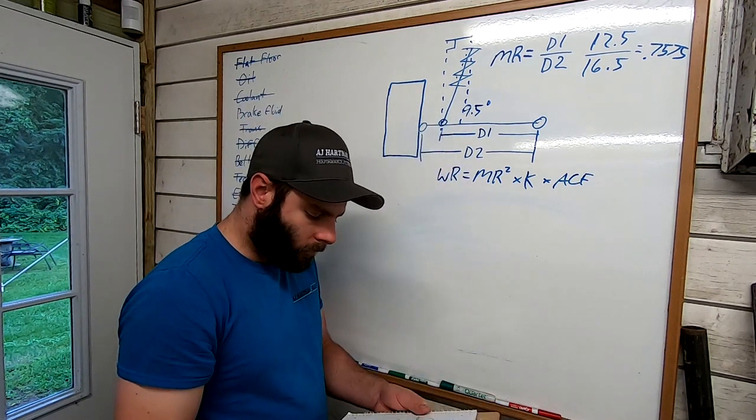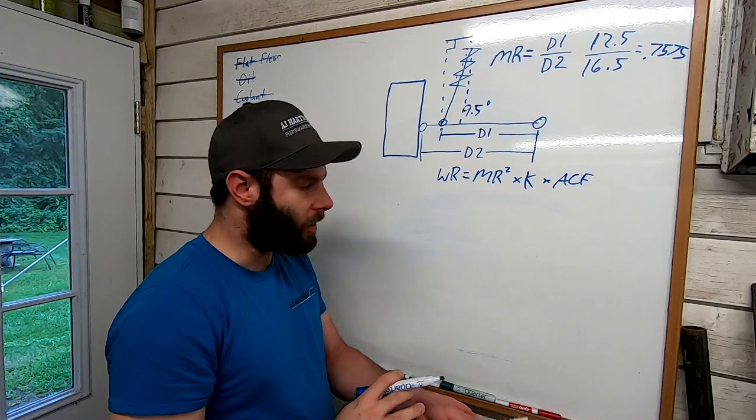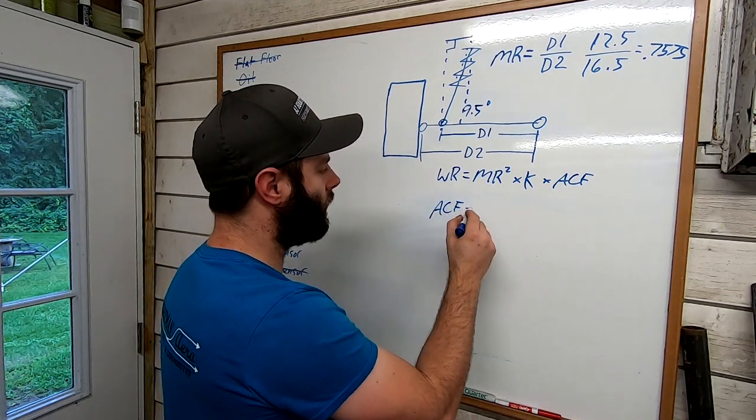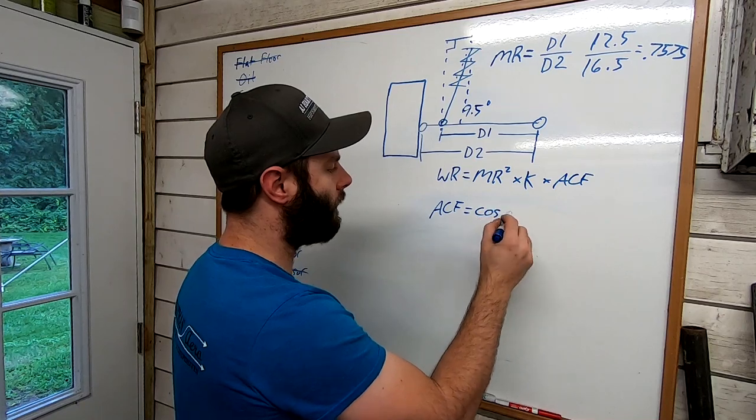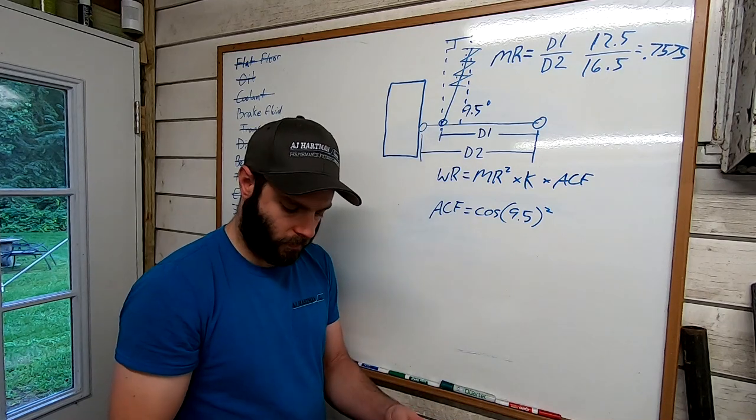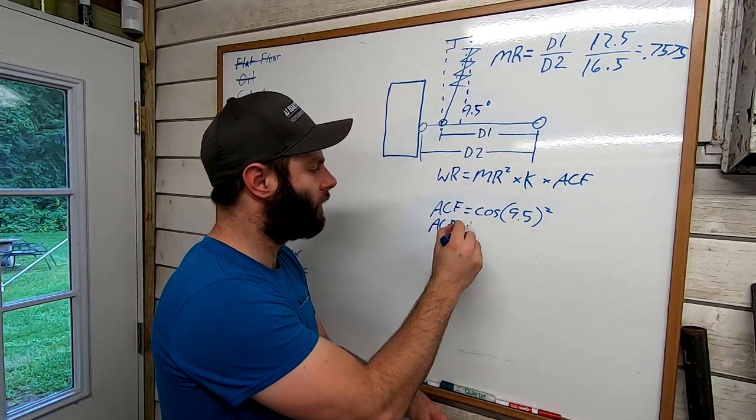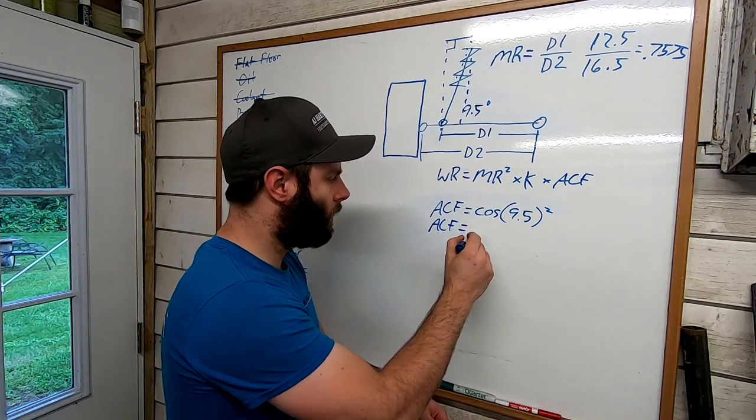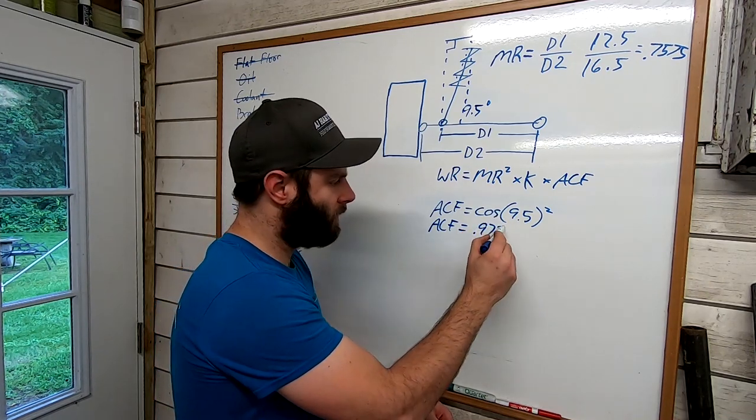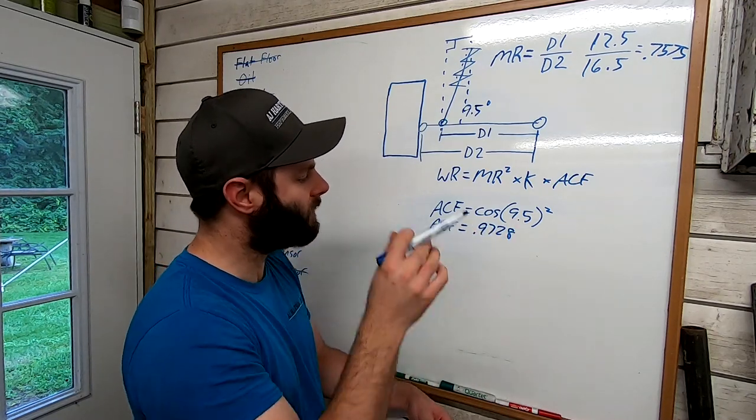And then like we mentioned, it's out about 2.5 inches. Calculate, there you go, there's our 9.59 degrees. So now I know that I'm in 9.5 degrees. So the angle correction factor equation is the cosine of your degrees squared. So in my case the angle correction factor is 0.9728.